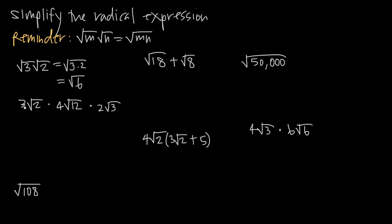In this example we have a whole number coefficient in front of each square root and all are multiplied together. We take the whole number coefficients 3, 4, and 2 and multiply them: 3 times 4 is 12, and 12 times 2 is 24. Then we separately multiply the square roots together: square root of 2 times square root of 12 times square root of 3 equals the square root of 2 times 12 times 3. That gives us 24 times the square root of 72, since 2 times 12 is 24 and 24 times 3 is 72.